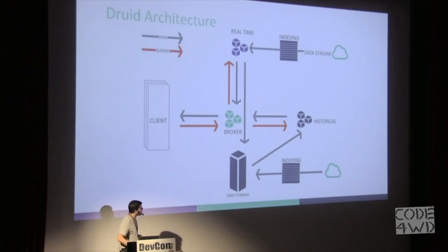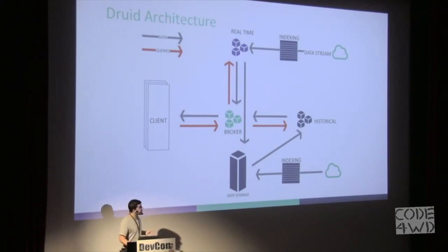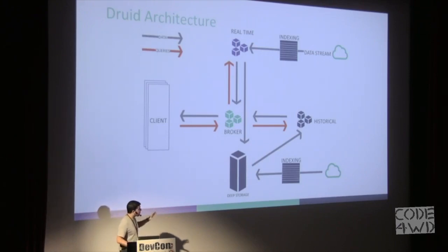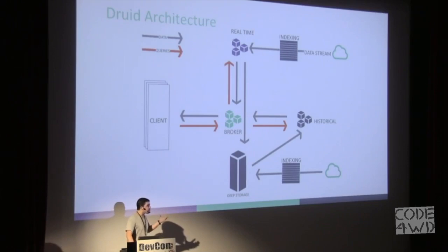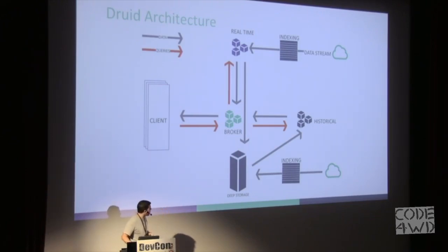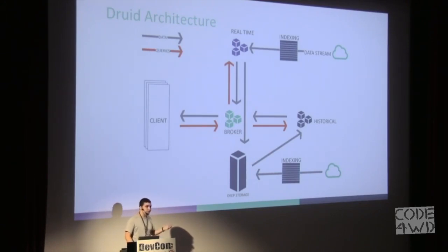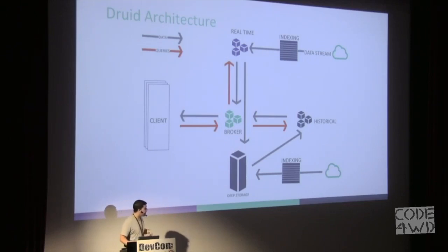Druid's architecture is designed to have no single point of failure and to support many concurrent queries. Every component can be replicated for high availability and load balancing. We can divide the Druid components into two processes: the indexing process and the query process. The indexing process is usually a MapReduce job running on a separate cluster — it gets input files to index and what aggregations need to be done, and stores the result on a layer called deep storage, which is usually S3 or HDFS. The query process receives queries from the client as JSON over a REST interface; the broker reads queries and distributes the job to the historical nodes, which pull data from deep storage and serve the query.